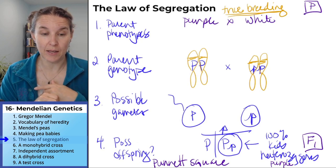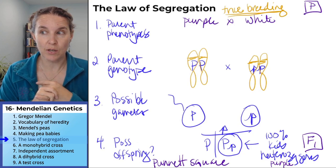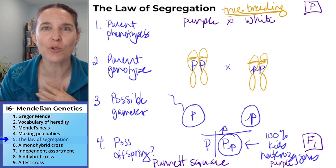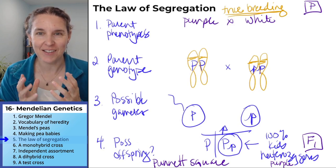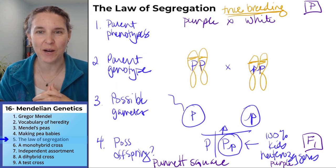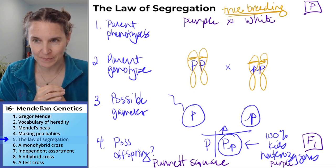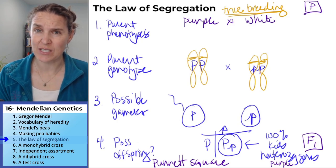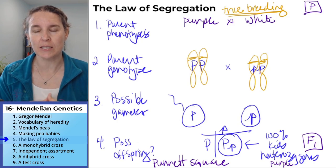The Punnett square was invented by Reginald Crundle Punnett, and it really does make it easier to visualize all the possibilities and make sure we account for every combination.